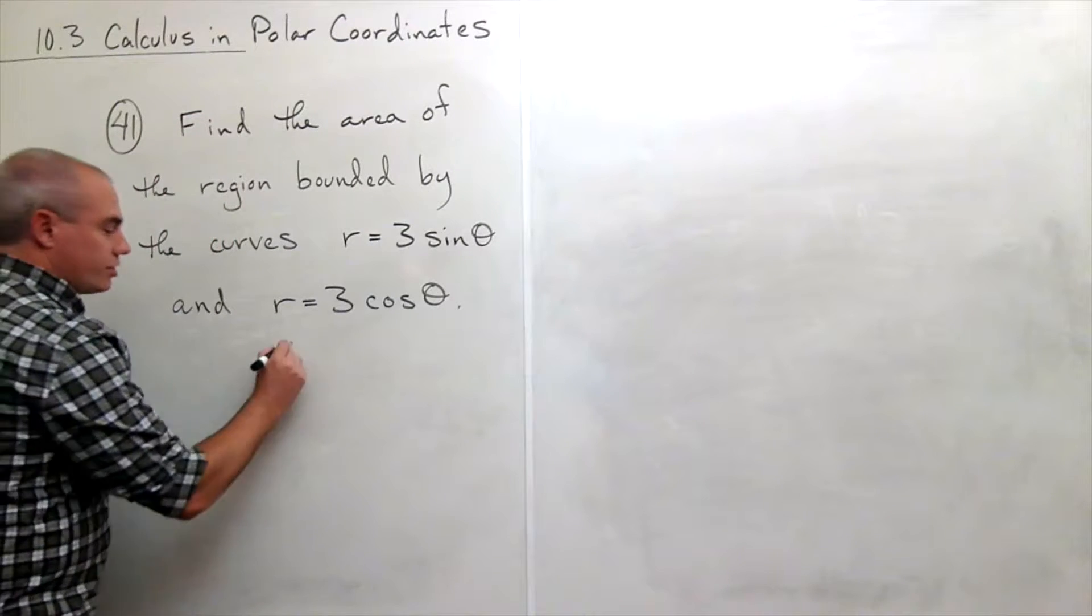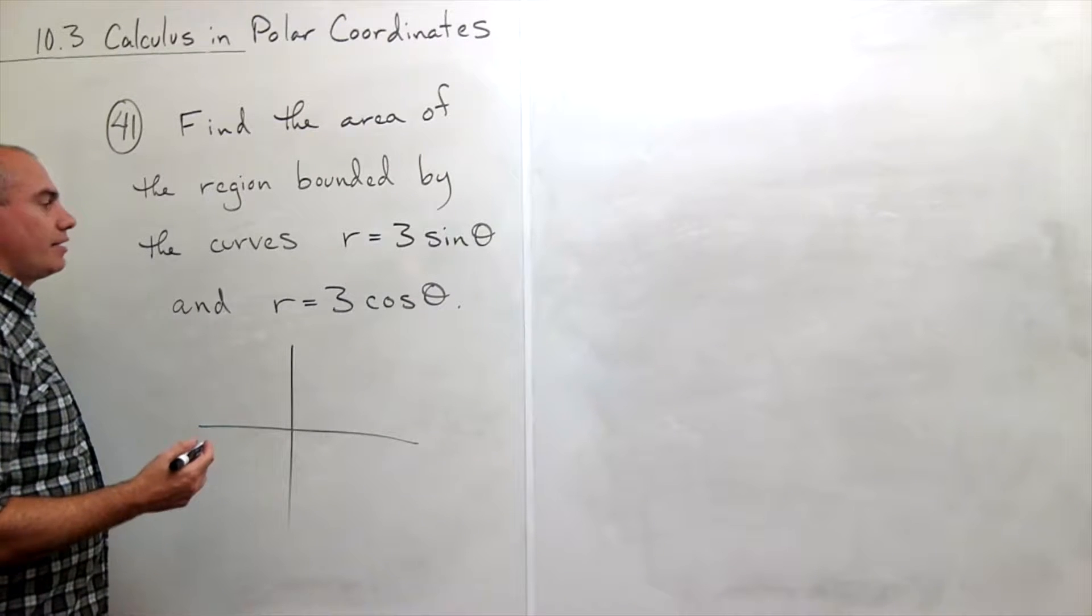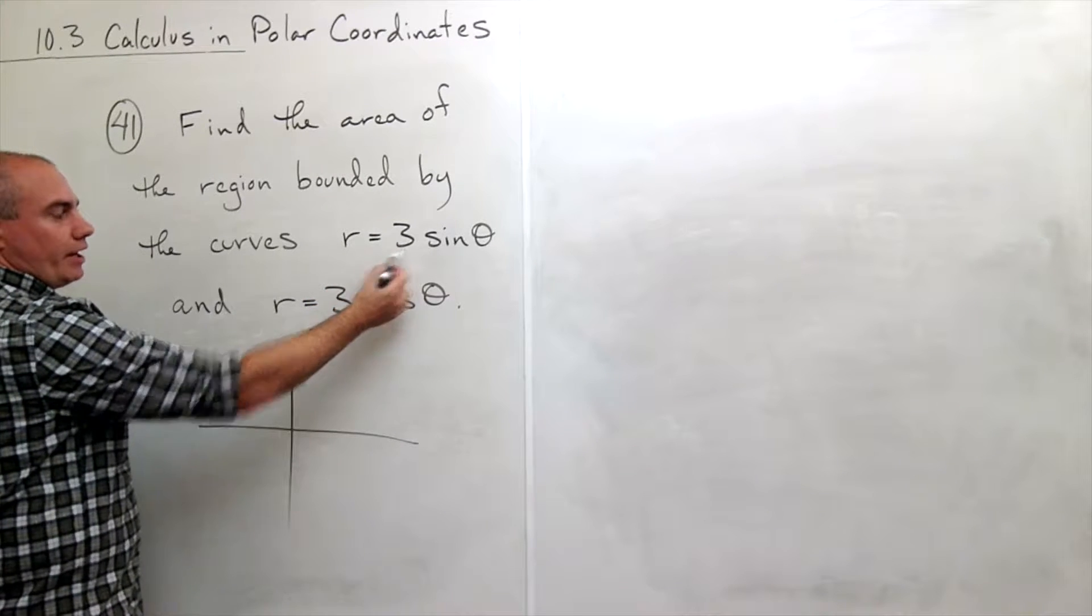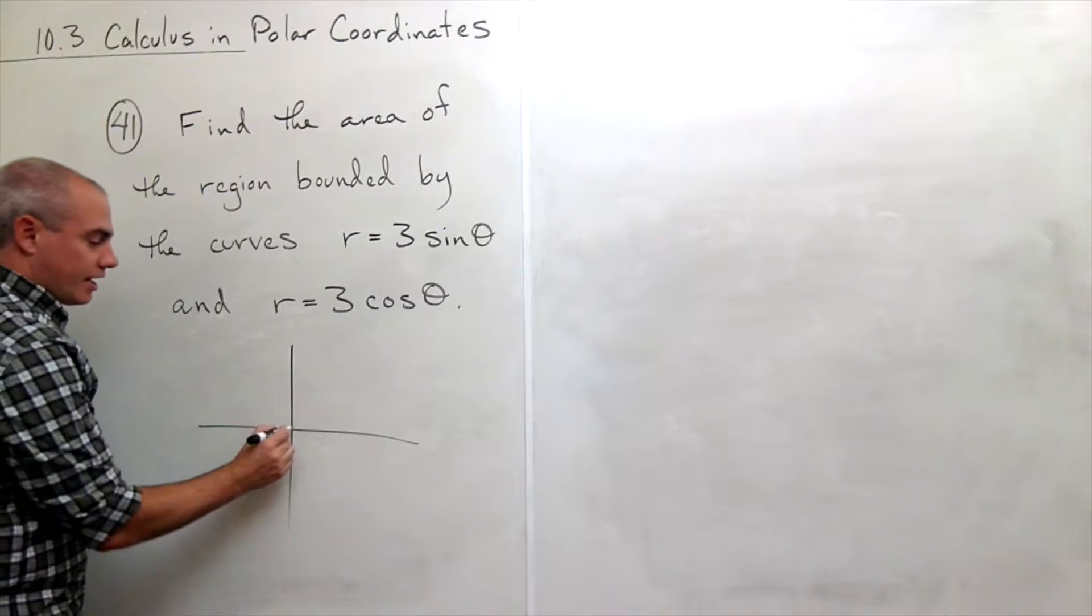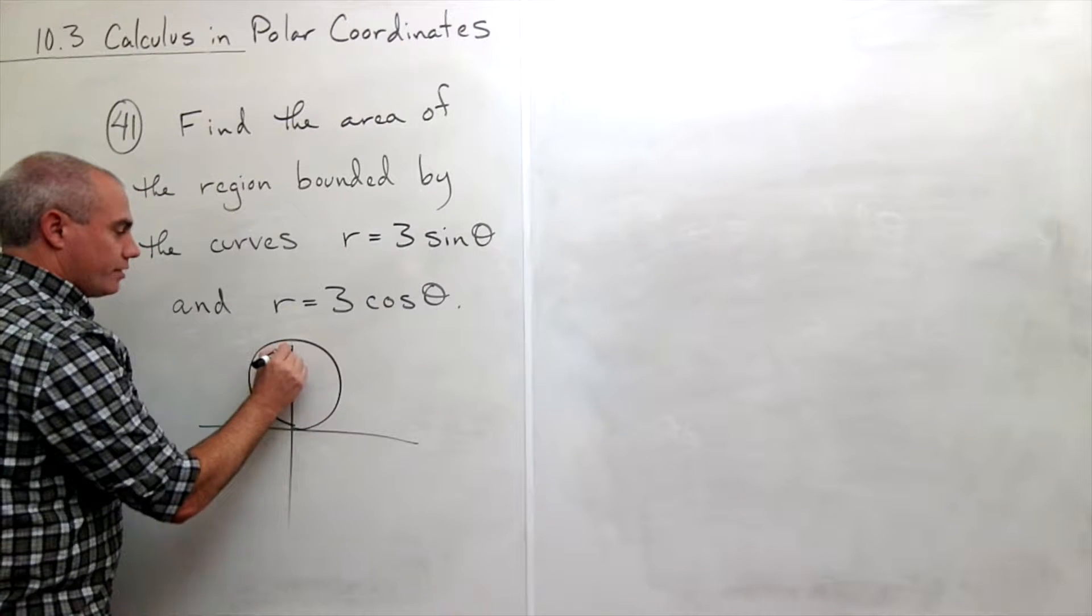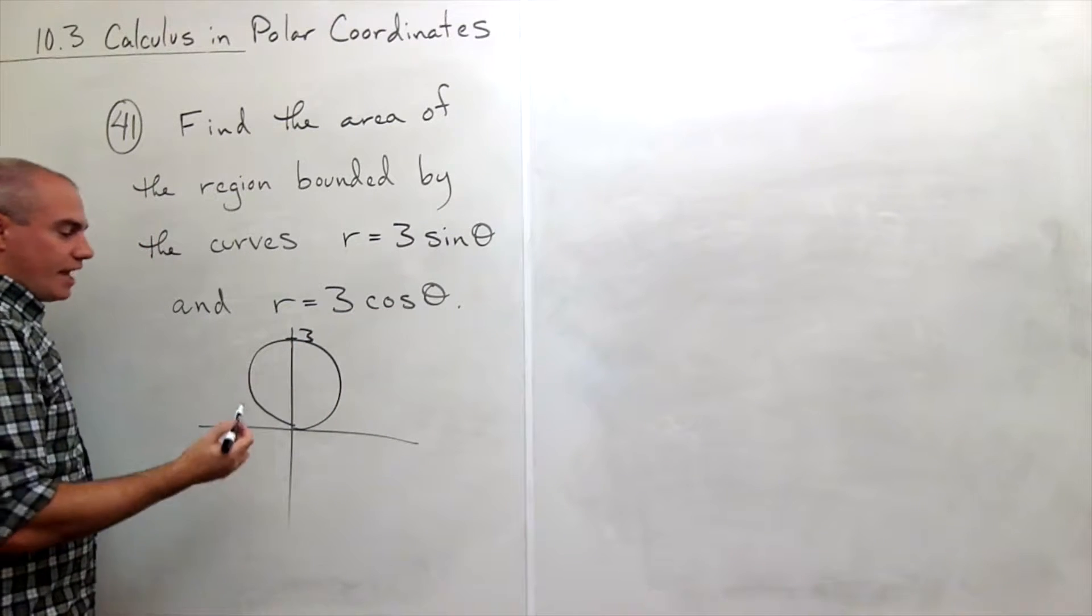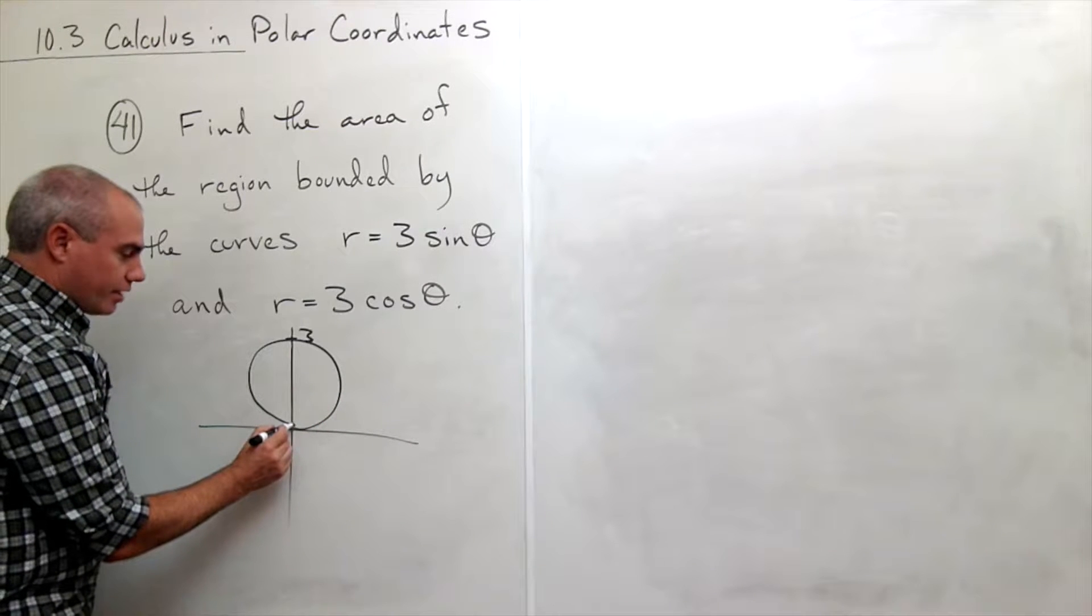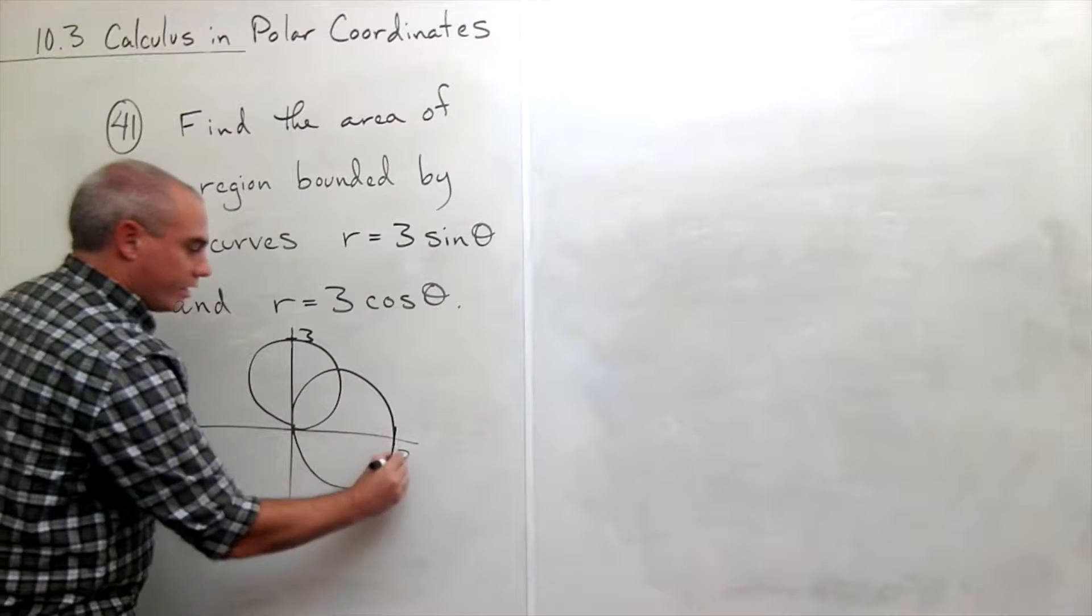So first thing I want to do is let's just draw the picture and see what this region looks like. R equals 3 sine theta is a circle of diameter 3 sitting on top of the x-axis and tangent to the x-axis. So let me draw that. So this would be up at 3. And then r equals 3 cosine theta is the same thing except this one's tangent to the y-axis sitting out here. So let me draw that. So that's out at 3.